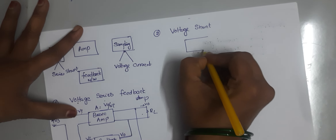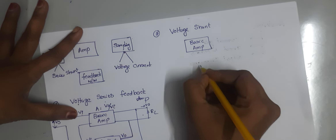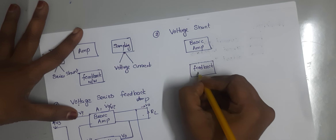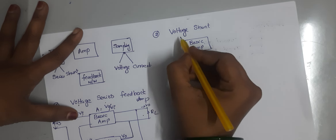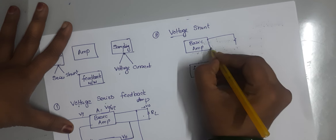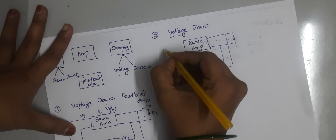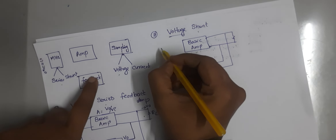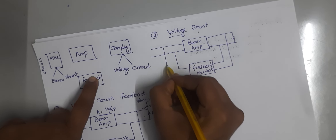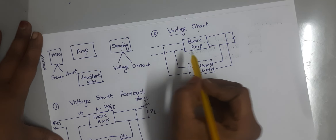First draw the basic amplifier, then draw the feedback network. Again, voltage means voltage sampling at the output side. Here shunt means shunt mixing at the input side, so we draw the shunt connection.